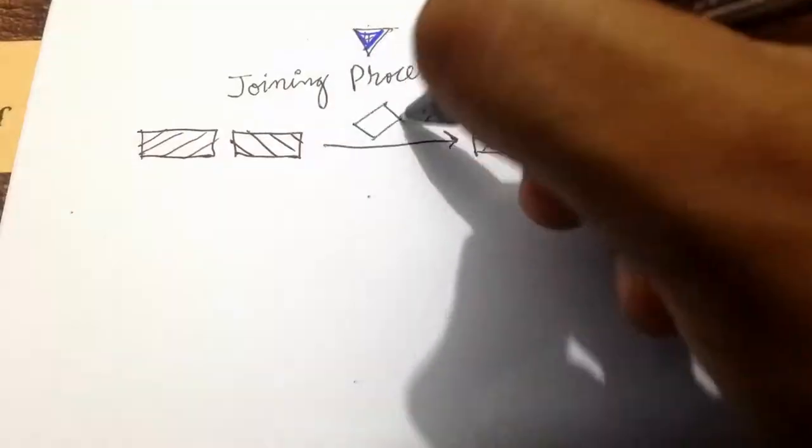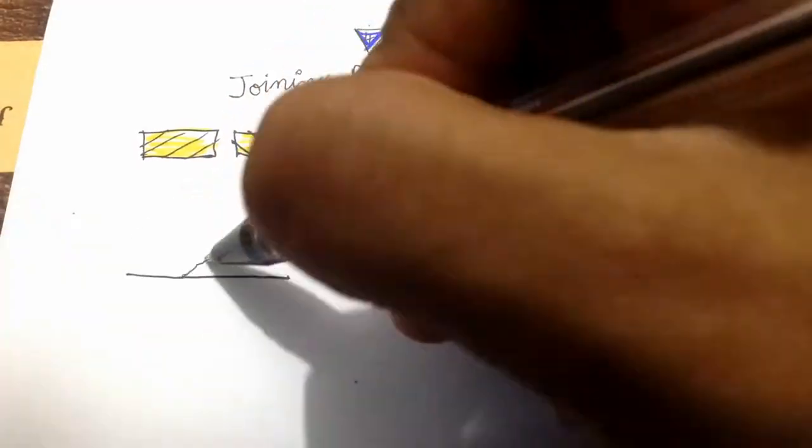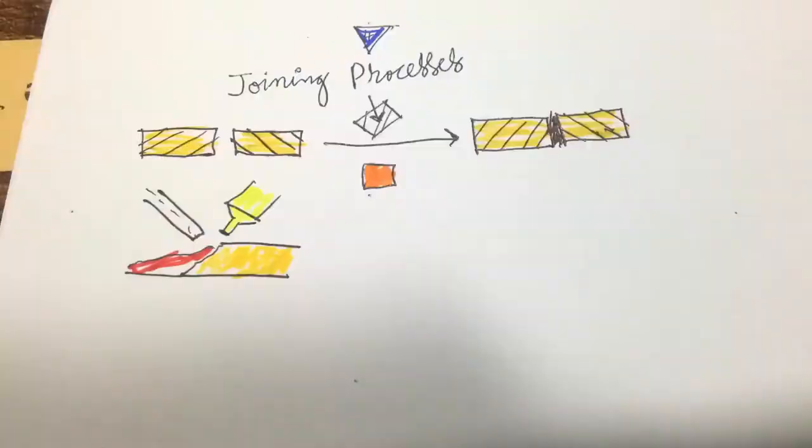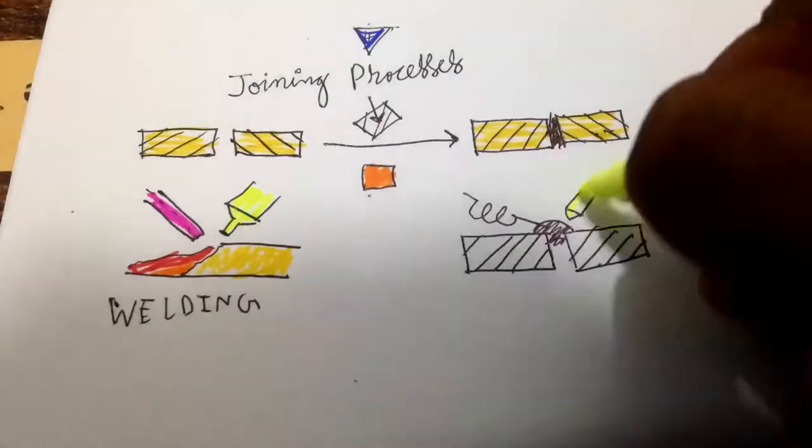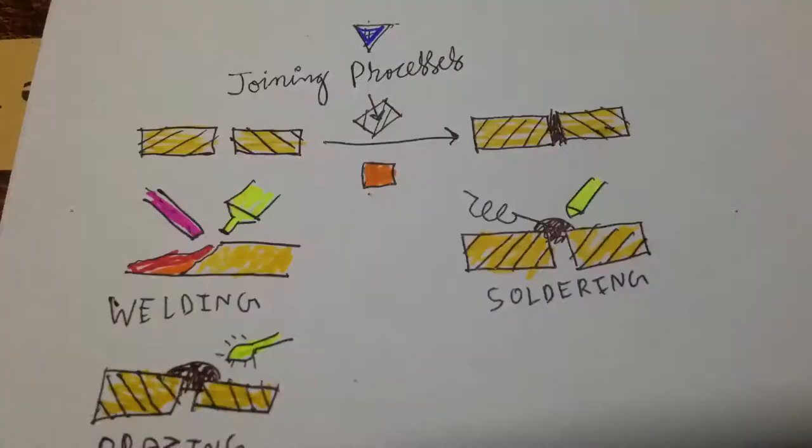Fourth group is joining processes. Here, two or more pieces of metal parts are joined together to make a final component using heat and or pressure. Examples include welding, soldering, brazing, screwing, adhesive bonding, etc.